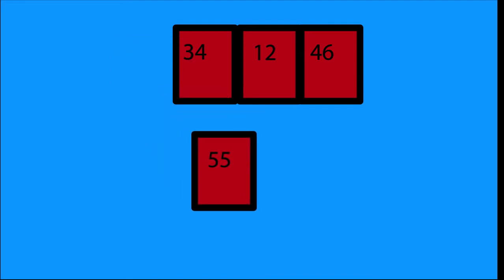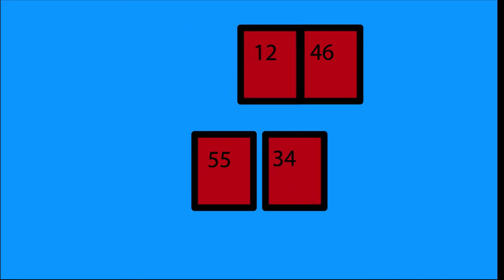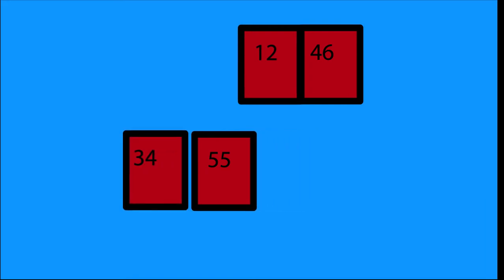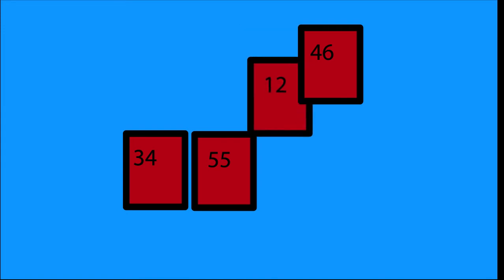The first thing in insertion sort is to look at the first number, which is 55. Since I only have one card in my hand, it's sorted. Then I pick up the second item in the array, which is 34. I swap them because they are not in order — 34 is less than 55, so I swap them to make sure my hand is in order.